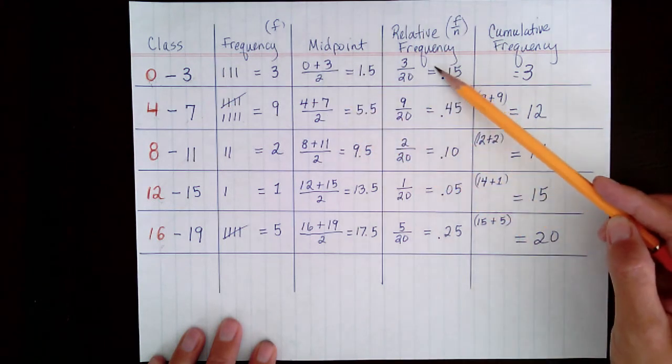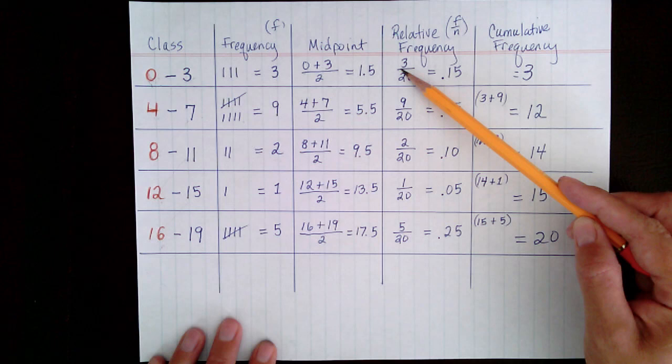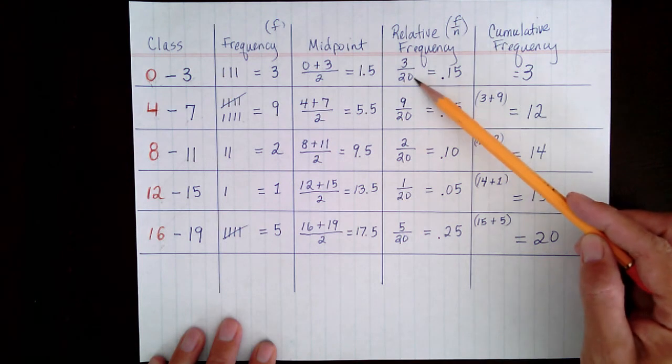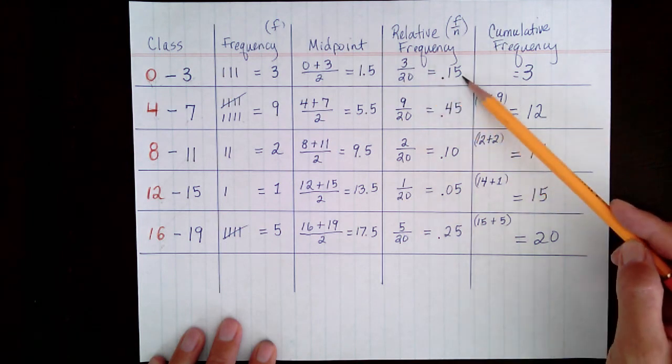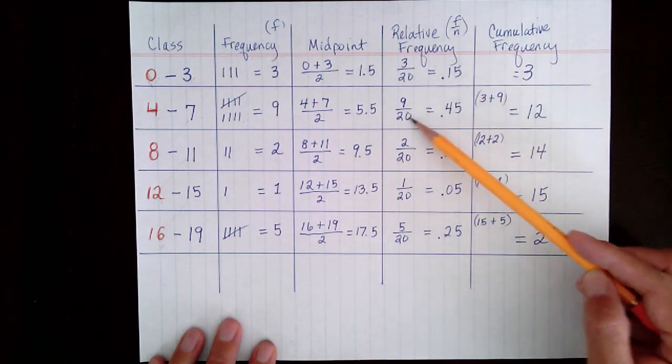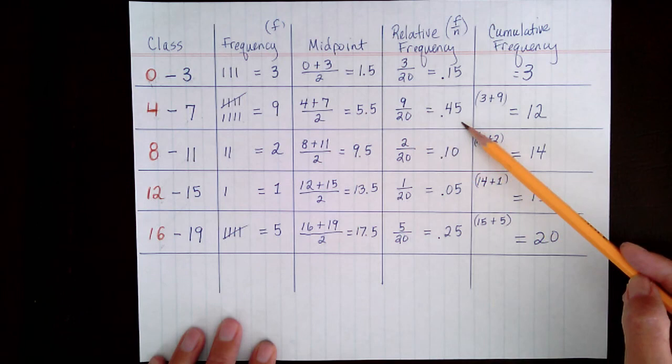To find your relative frequencies, you look at the frequency of the class and divide by the total number of data. We had 20 data values. So 3 divided by 20 is 0.15. 9 divided by 20 is 0.45. And so on.